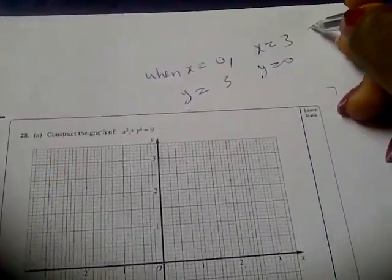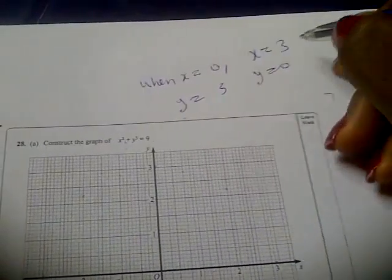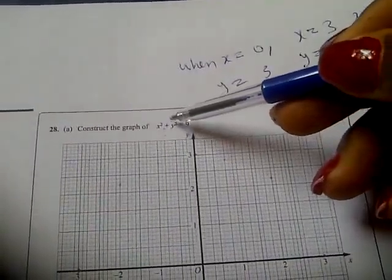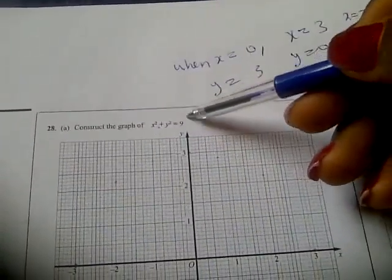So when x is minus 3, what would y be? When x is minus 3, minus 3 squared is still 9, y would be 0.